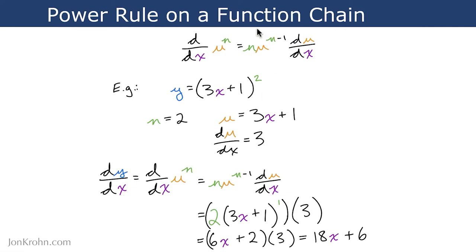And then now we can make use of our new power rule on a function chain. So according to that, dy dx is going to be equal to this equation here, and so we can simply substitute in all of the variables that we have. So n is equal to 2. Our power is 2. So we put that 2 in front here, and we put 2 minus 1 as the power up here. We drop in u, 3x plus 1 here, and we multiply all of that by du dx, which we've now calculated and determined to be 3.